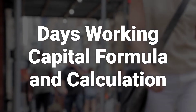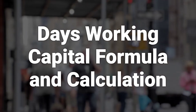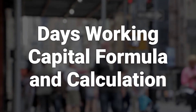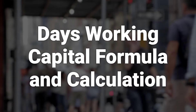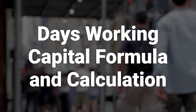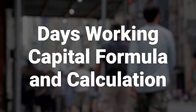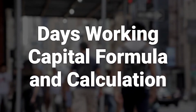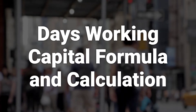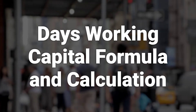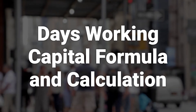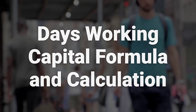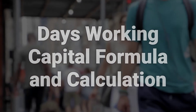The formula to calculate days working capital is average working capital multiplied by 365, divided by the sales revenue. Working capital is calculated as the total of a company's current assets minus its current liabilities.